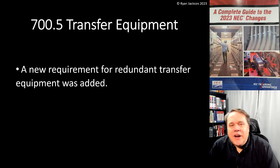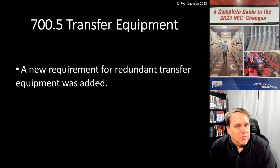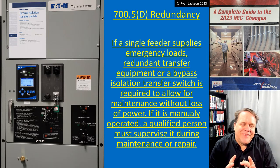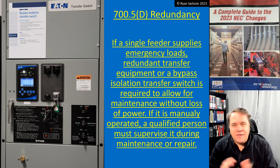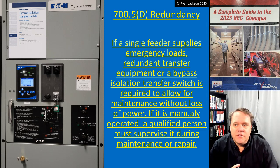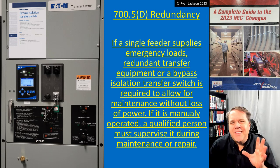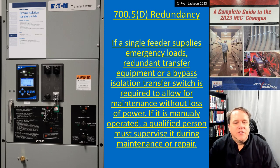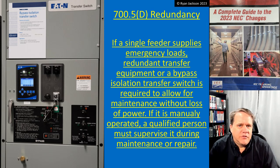700.5 transfer equipment — a new requirement for redundant transfer equipment was added. The code language here isn't perfect, but the idea is pretty clear. If a single feeder supplies emergency loads, then redundant transfer equipment or a bypass isolation transfer switch is required to allow for maintenance without loss of power.